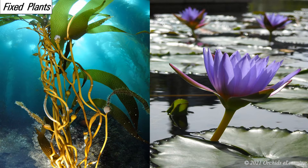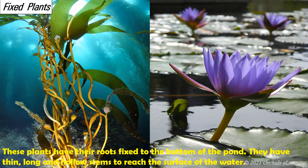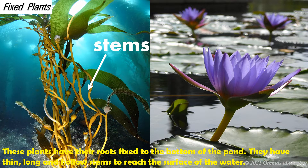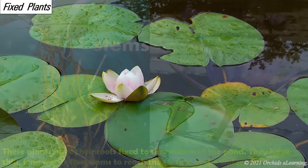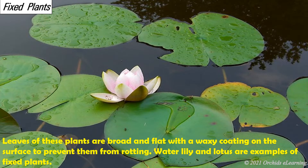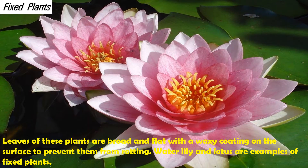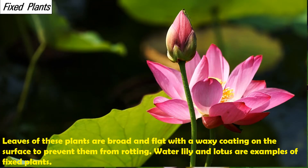Fixed plants: these plants have their roots fixed to the bottom of the pond. They have thin, long, and hollow stems to reach the surface of the water. The leaves of these plants are broad and flat with a waxy coating on the surface to prevent them from rotting. Water lily and lotus are examples of fixed plants.